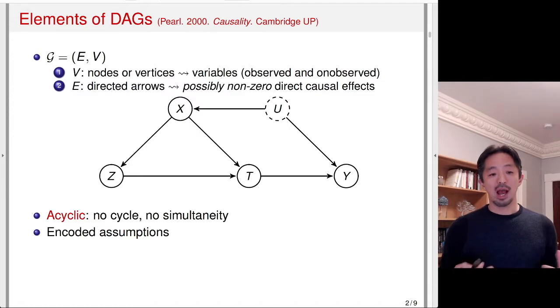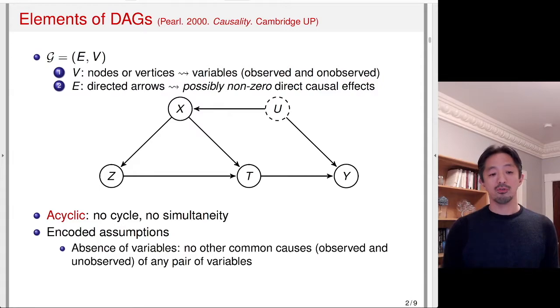What a graph represents is a set of assumptions. In fact, the assumptions are reflected in things that are not shown. First, the absence of variables means that there's no other common causes of any pair of variables that are in this graph. There may be another variable that's not written here, but affecting, say, only Z. That type of variable can be omitted because it doesn't really affect anything else. So even if there is another variable, say W, that's affecting Z, we can omit it from the causal DAG because it doesn't affect any operation that we're going to perform on other variables. Of course, if that variable itself is of interest, you want to include it in the graph. But if that's not relevant, then we can exclude it. However,